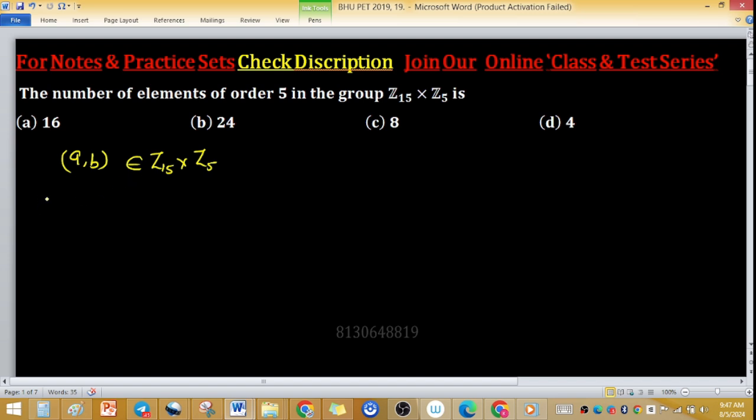The order of (a,b) equals the LCM of order of a and order of b - the LCM of individual orders. We want this LCM to be 5 as given in this problem.